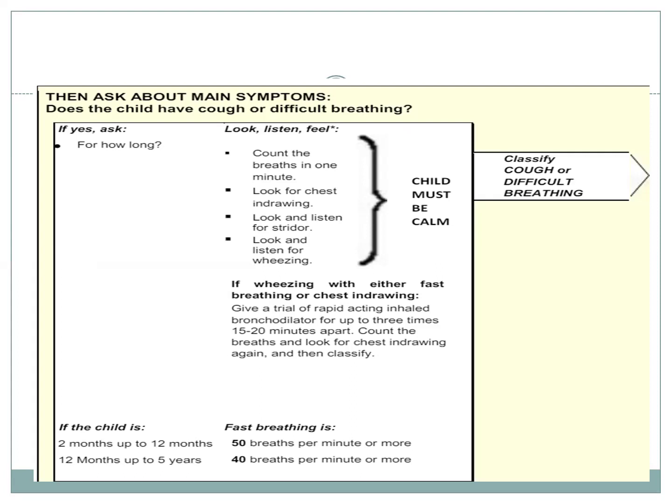Stridor is an extremely dangerous sign. If the child has fast breathing per the given parameters, a short-acting bronchodilator is provided and the child is reassessed every 15 to 20 minutes. If breathing comes down to normal, it is not classified as fast breathing. The bronchodilator is provided up to 3 times at 15-minute intervals. If breathing has not normalized after 3 doses, it is classified as fast breathing.